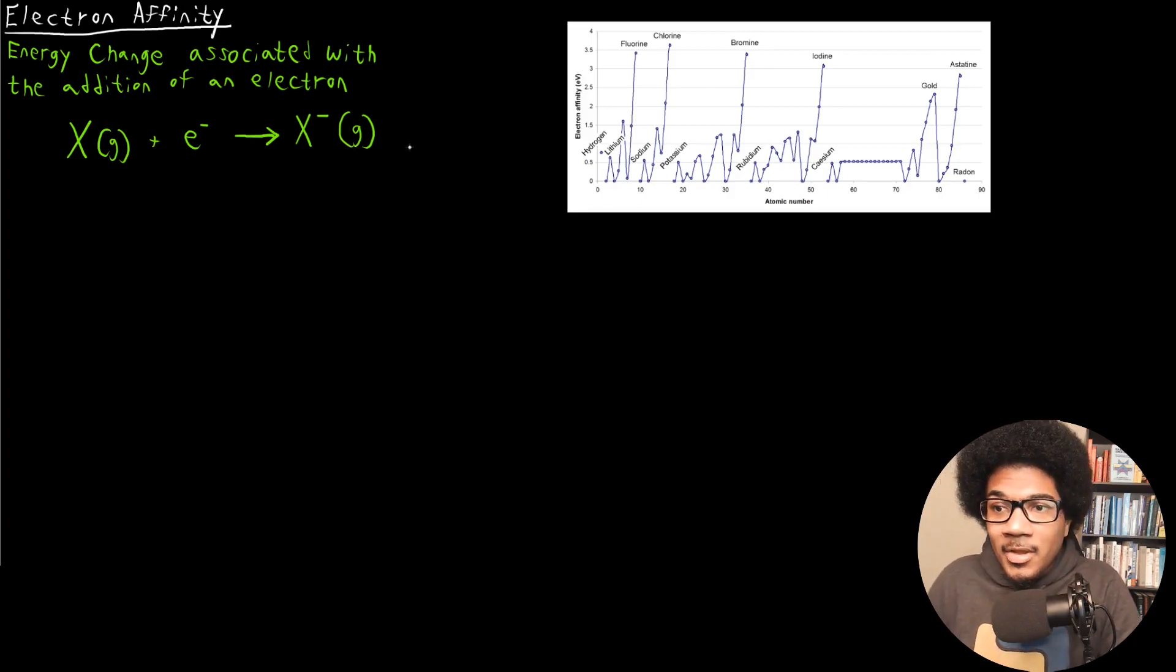What I have here on the right hand side is some experimental data of electron affinities for different atoms. We show the first 90 atoms, going from atomic number zero to 90 on the x-axis, and the y-axis is showing the electron affinity in electron volts. There might not be a clear trend when you just look at this plot for the first time, but if we start to isolate a few cases we can start to see the trend.